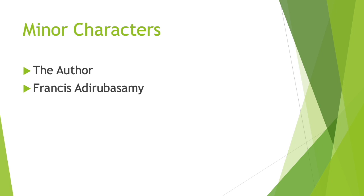The next character is Francis Adirubasamy. He is the kind elderly man who tells the author Pi's story during a chance meeting in a Pondicherry coffee shop. He arranges for the author to meet Pi in person to get a first-hand account of Pi's story. He is a friend of the Patel family and taught Pi to swim as a child, and gave him the name Kaseem.